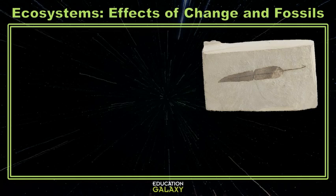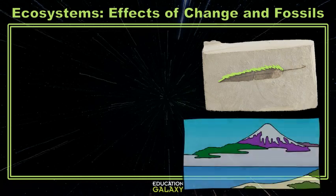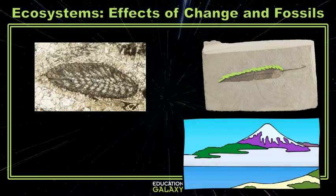Since the edges of this leaf are very jagged, and that is a trait common to cold weather plants, we can speculate that the area this leaf came from was cold. This other leaf has smooth edges, leading us to believe that the climate it came from was a warm area.